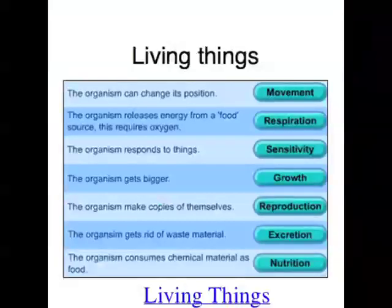That was a basic run-through of the scientific method, and the next thing I want to talk about are a couple of important principles in biology. Biology is the study of life, and living things are called organisms. But how do you decide if something is a living thing or an organism? It turns out that all organisms share some common characteristics. So all living things — all organisms — move.